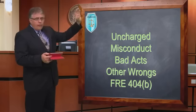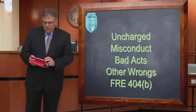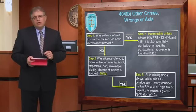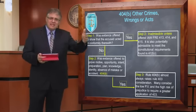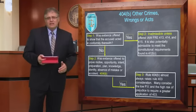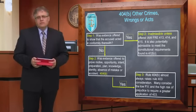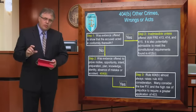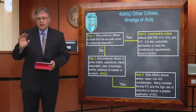Let's segue from 404(A), where we're dealing with a character theory of relevancy, to the non-character theory of relevancy, 404(B). Step one: was the evidence offered to show that the accused was acting in conformity therewith? In other words, am I going to argue that because the accused did this in the past, it's more likely they did it this time? That's a propensity argument. If I wish to make a propensity argument, I cannot offer it under a 404(A) theory — it's not going to be admissible. In federal court, if you're dealing with a crime of a sexual nature — rape, molestation of a child, or sexual assault — you need to look at Rules 413, 414, 415, and 412, which have specific guidelines different from the 404(B) rule.